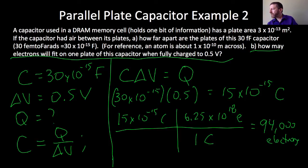So that's how many electrons, when it's fully charged, are on one plate. I ask you, how many electrons are missing from the other plate? Well, 94,000. It has to be the same magnitude of charge on both sides.